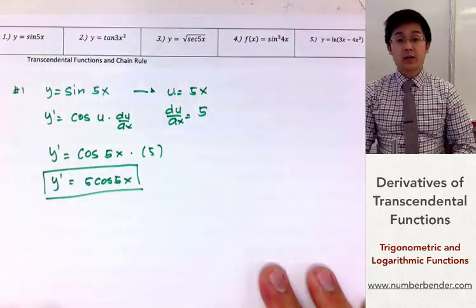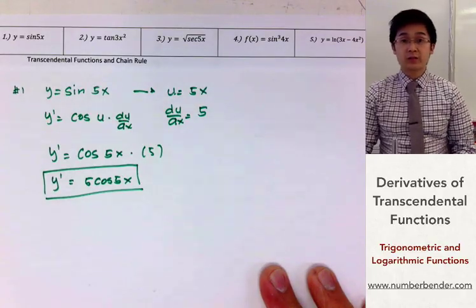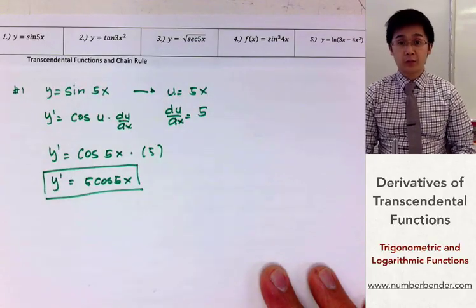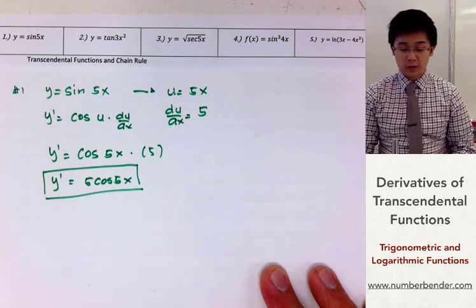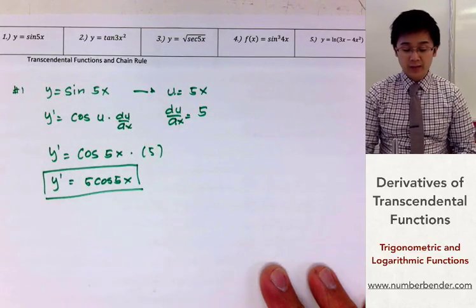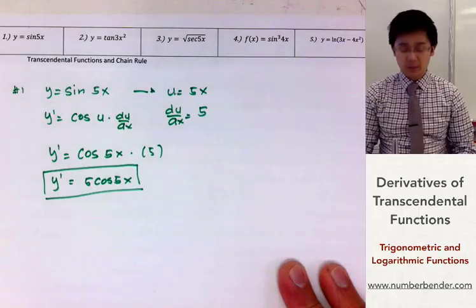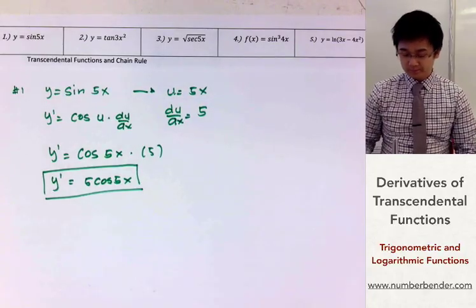So this is our derivative for sine 5x, which simplifies to 5 cosine 5x. This is how we use the derivative formula for sine 5x, applying the chain rule in the process.